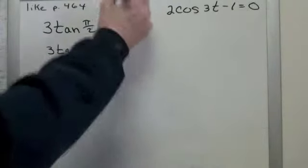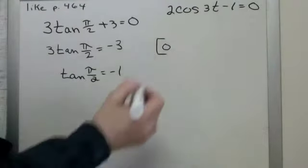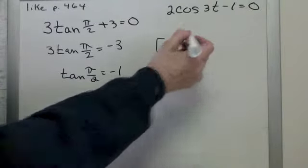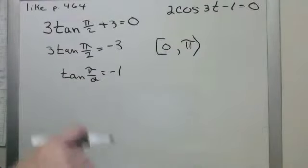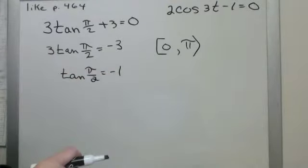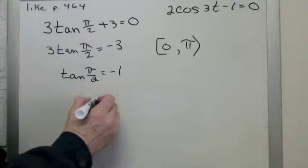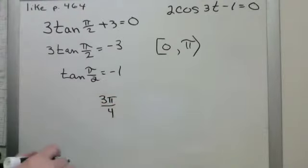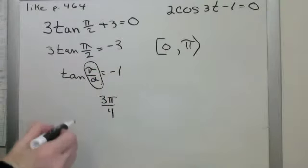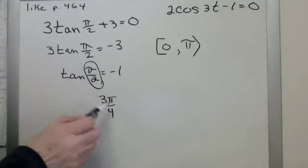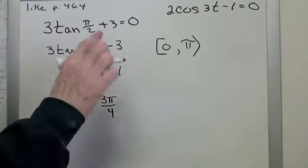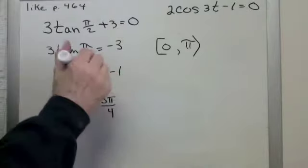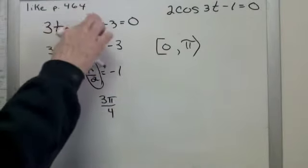So now, using the interval, and the interval for tan is going to be from 0 to pi, where is the tangent equal to negative 1? And the only place on that interval that the tangent is equal to negative 1 is 3 pi over 4. But that's the answer for x over 2. You know what, this was supposed to be an x, not a pi. I think I copied it wrong when I did the original. Let's just fix that.